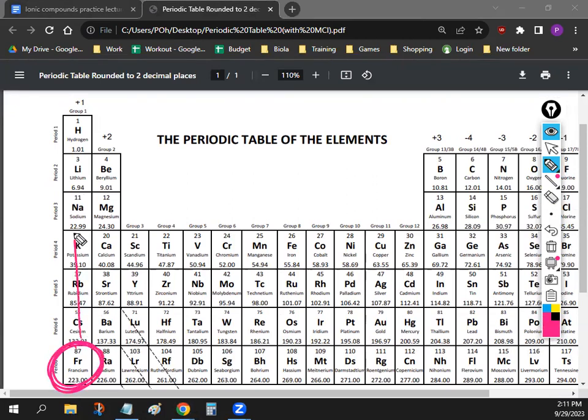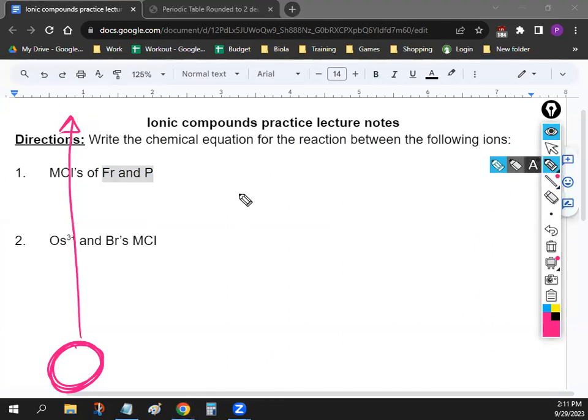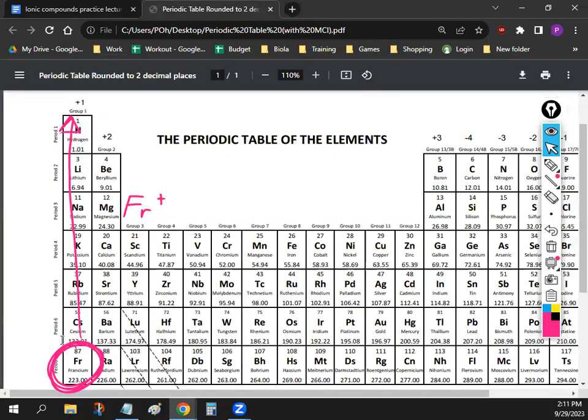So Fr is going to be positive one. Let's write down Fr plus on our notebook. So it'll be Fr and then that'll be plus one. And it's because it's right here in this column, the plus one column. Everybody okay with that one?